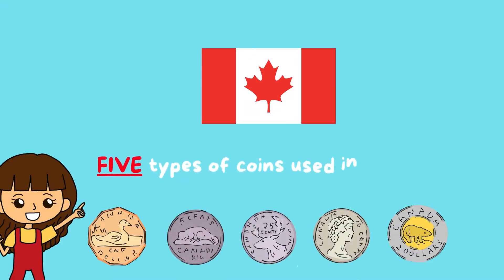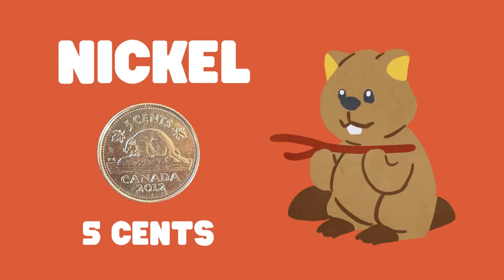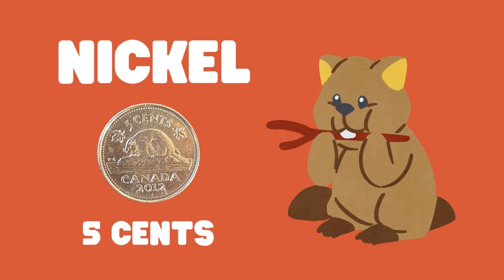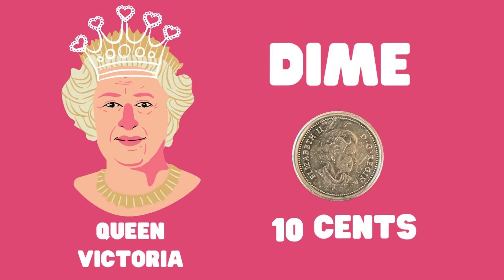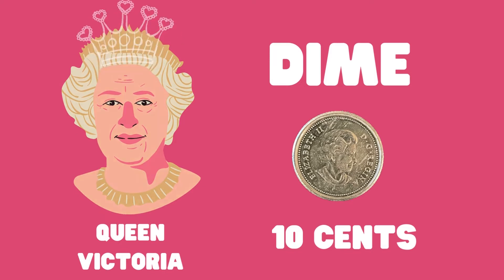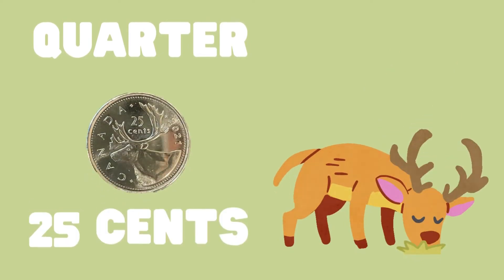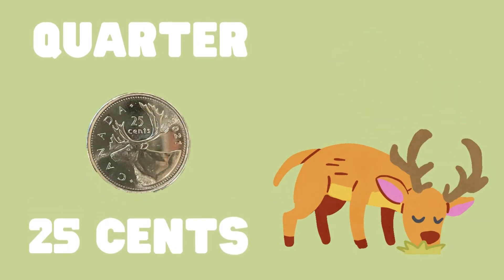There are five types of coins used in Canada. There are nickels — one nickel is worth five cents. There are dimes — one dime is worth ten cents. There are quarters — one quarter is worth twenty-five cents.